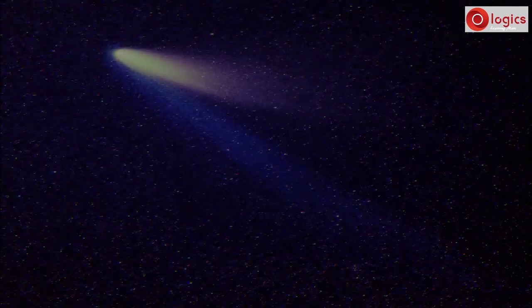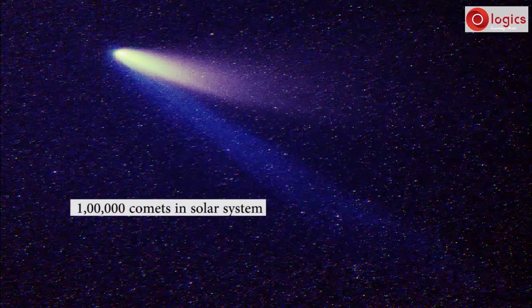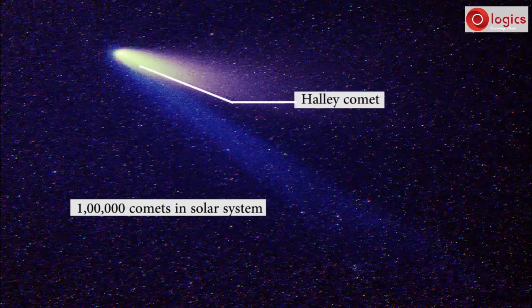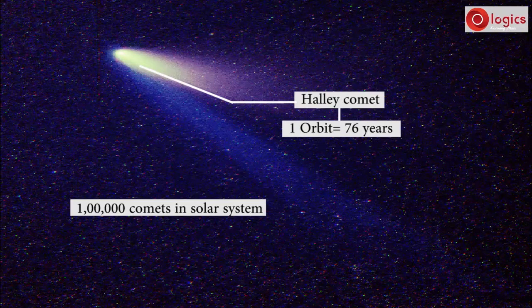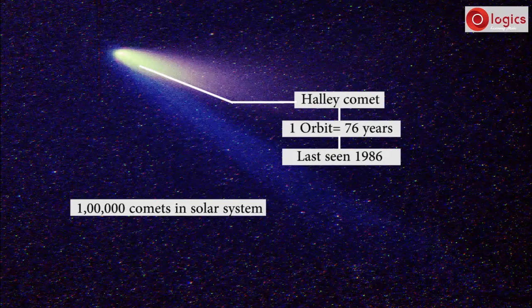There are about one lakh comets in our solar system. Halley's comet is the most important one. It completes its orbit around the sun in 76 years and was last seen in the year 1986.